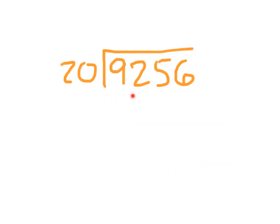In this problem, I have 9,256 divided by 20. So I ask myself, 20 going into 9? Nope. Can't do that. So I look at 92 divided by 20. 92 divided by 20 is 4, because 4 times 20 is 80. 92 minus 80 is 12, and I bring down the 5.